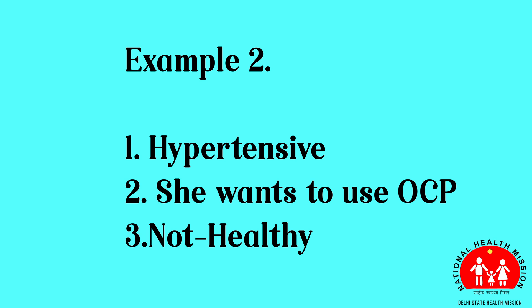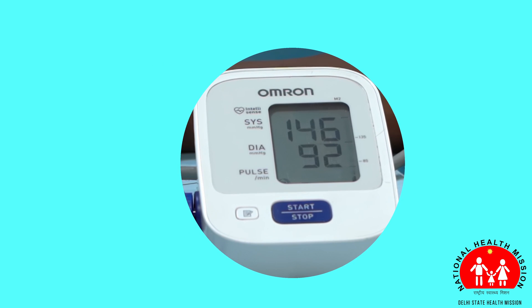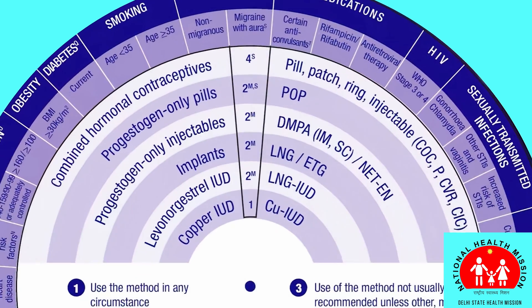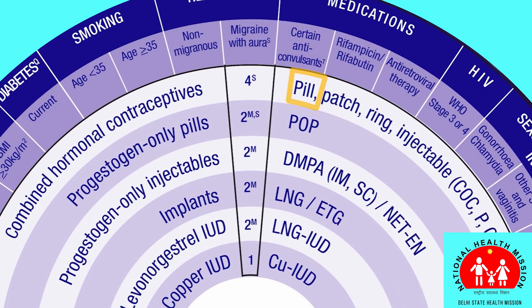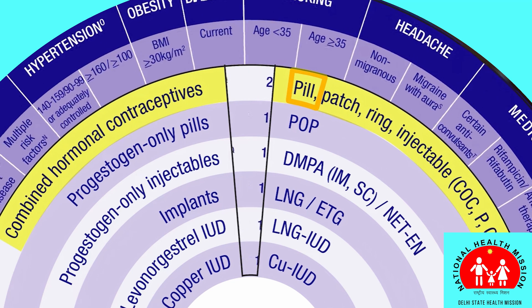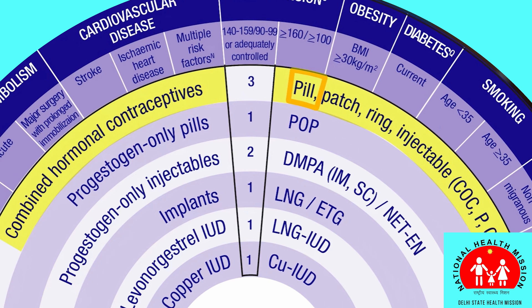In the next example, a woman wants to take the pill but her blood pressure was too high on her first visit. She has returned for a second measurement and it is still elevated at 146 over 92 millimetres of mercury. Check the MEC wheel — find the pill, then rotate the wheel to the section on hypertension. Her BP is in the first range as indicated by the outer wheel.